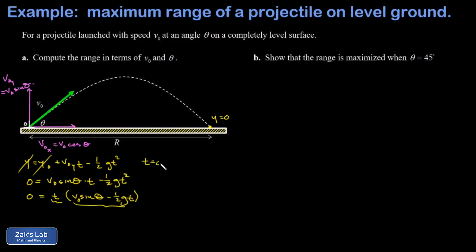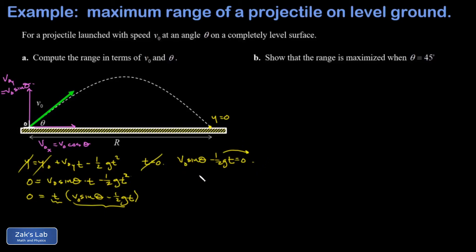One solution is T equals zero, which is just the launch moment — we're not interested in that. We want the landing solution, where V₀ sine theta minus one-half G·T equals zero. Adding that term to both sides, multiplying by 2, and dividing by G gives a flight time of T = 2V₀ sine theta over G.